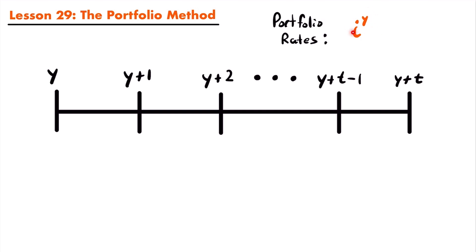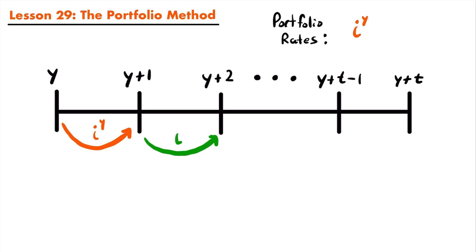The rate i for year Y would be the interest rate that accumulates interest from year Y to year Y plus one. So from year Y to Y plus one, interest would be accumulated using the portfolio rate assigned to year Y. That interest rate could change for the following year. To accumulate interest from year Y plus one to year Y plus two, we would use another portfolio rate corresponding to the year Y plus one.